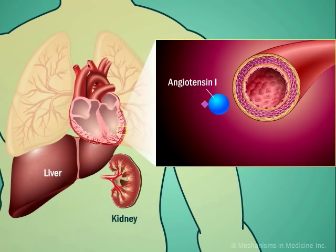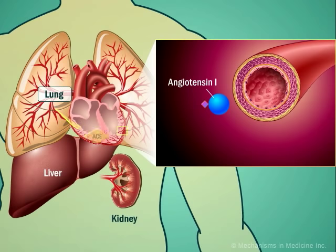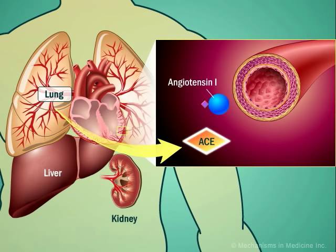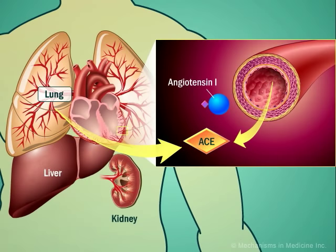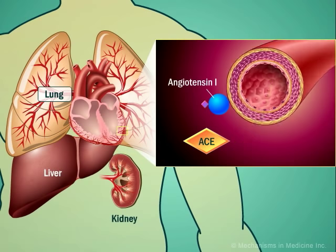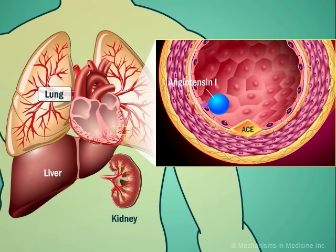Further transformation of angiotensin is carried out by angiotensin-converting enzyme, or ACE. This is predominantly found in the pulmonary circulation. However, ACE is also produced in the vascular endothelium of many tissues, including the kidney, adrenal gland, brain, and heart.